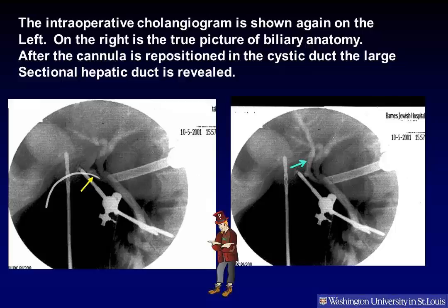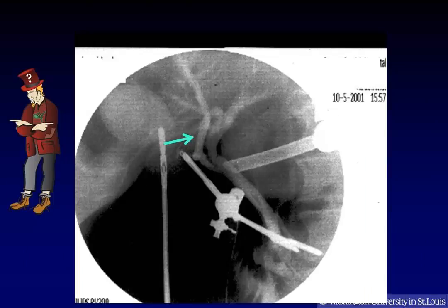The intraoperative cholangiogram is shown again on the left. On the right is the true picture of biliary anatomy. After the cannula is repositioned in the cystic duct, the large sectional hepatic duct is revealed, as shown by the blue arrow. Here is a close-up of the same cholangiogram.